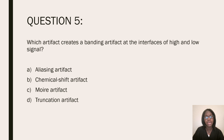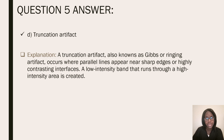Question five: which artifact creates a banding artifact at the interfaces of high and low signal? Aliasing artifact, chemical shift artifact, moire artifact, or truncation artifact? Truncation artifact. This artifact is also known as Gibbs or ringing artifact, which occurs where parallel lines appear near sharp edges or highly contrasting interfaces. A low intensity band that runs through a high intensity area is created.